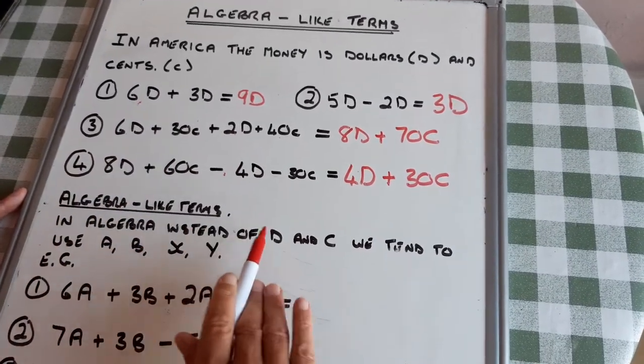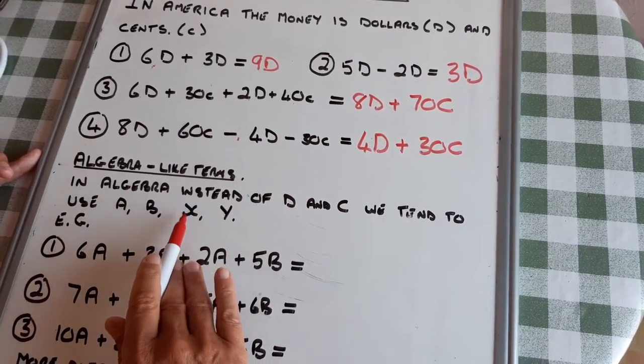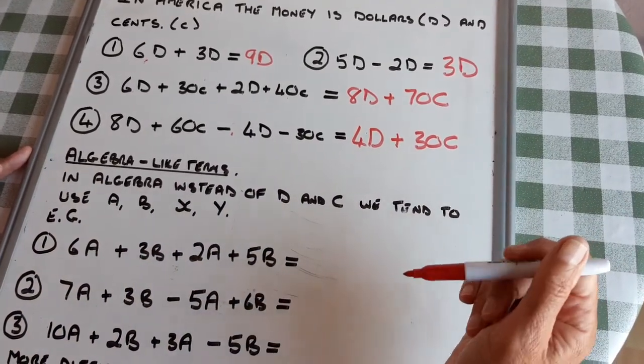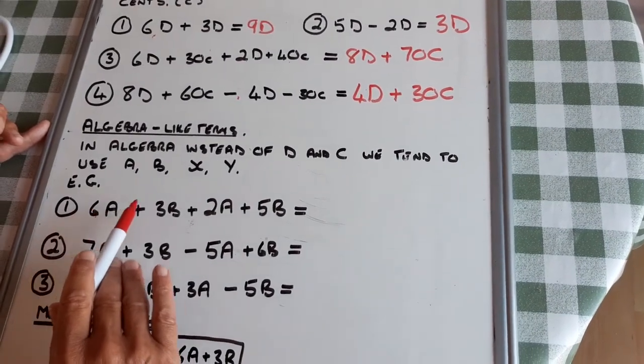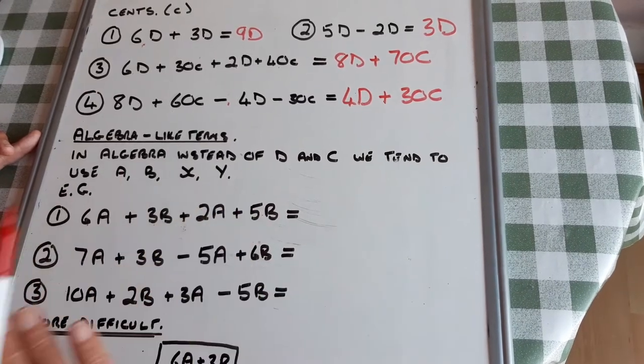But instead of D and C, we tend to use A, B, X, Y, or any other letter. This question, I have six A plus three B plus two A plus five B.